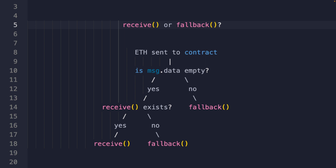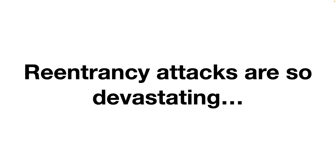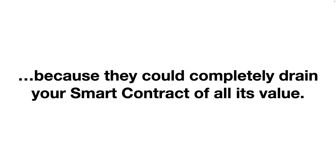Now that you have a brief taste of how to program a contract to receive money, the next step is to beef up on security. Blockchain and money go hand in hand, and whenever you're dealing with money you need to be familiar with security mechanisms to prevent attacks like reentrancy attacks, which are very famous on Ethereum. Reentrancy attacks are devastating because they can completely drain your smart contract of all its value.